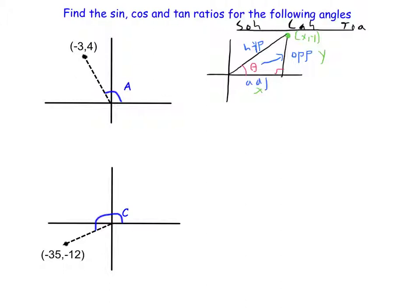And your hypotenuse, generally we call this R, but that's actually equal to X squared plus Y squared, and then the square root of all that, little Pythagorean theorem. So this can help you build the formal definitions.